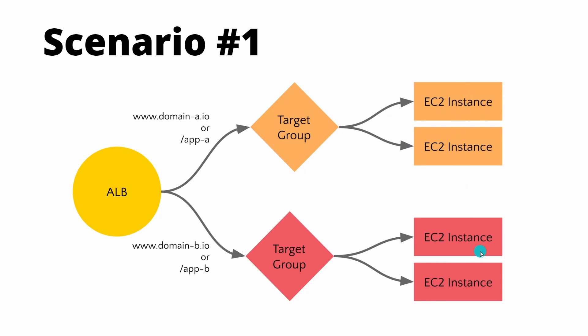Then they use Ansible to deploy the software on those EC2 instances. So you use Terraform to create the infrastructure and Ansible to install and configure the software — which is what Ansible is best fit for. You can use both Ansible and Terraform together in this scenario where you have a constant set of EC2s and you are not scaling in or scaling out.